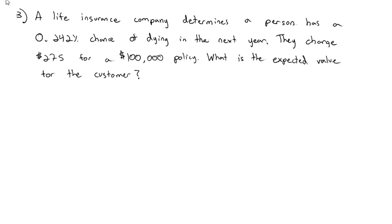Notice this time it's in the perspective of the customer, not the company. So when we keep in mind positive and negative, we're thinking from the customer's perspective. So we look at the options, the probability, and the payout. Really, there's two options for this customer. They could live or they could die. We've determined that there is a 0.242% chance of dying. Make sure we change that to a decimal, so it's 0.00242. Therefore, the probability of living is 1 minus that, 0.99758.